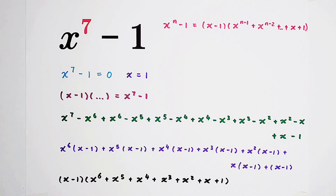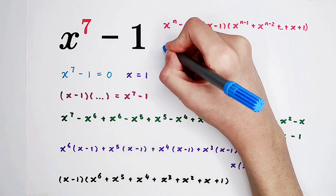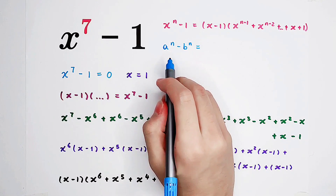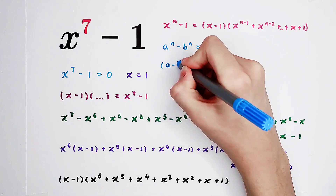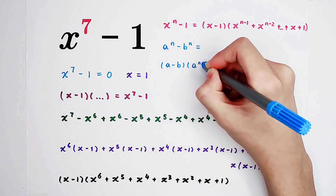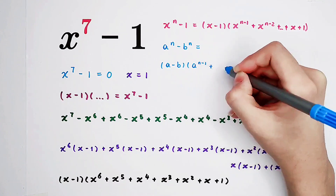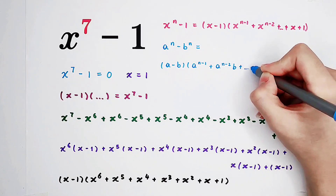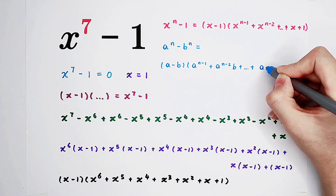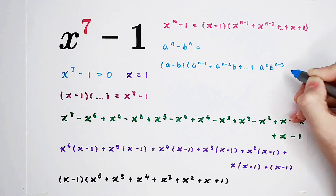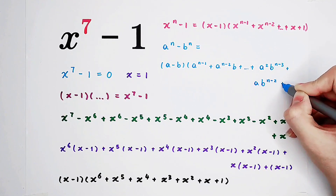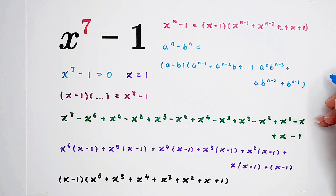Of course, we also have the formula for a to the power of n minus b to the power of n, where a, b, and n are positive integers. It equals a minus b, times a to the power of n minus 1, plus a to the power of n minus 2 times b, plus a to the power of n minus 3 times b squared, plus a times b to the power of n minus 2, plus b to the power of n minus 1. Do you get it? Give me a thumbs up. See you next time, bye-bye.